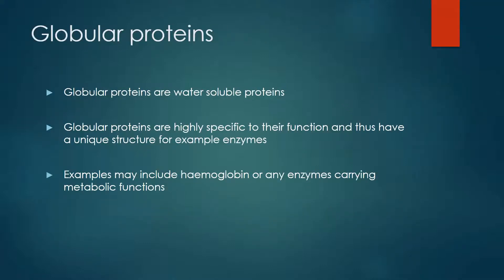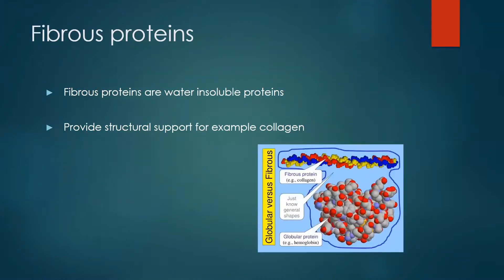There are two main types of proteins: globular and fibrous proteins. Globular proteins are water-soluble proteins. They're highly specific to their function and thus have a unique structure, for example enzymes. Examples of globular proteins include those involved in metabolic functions and hemoglobin. Fibrous proteins, on the other hand, are water-insoluble and often provide structural support, for example collagen in bones.